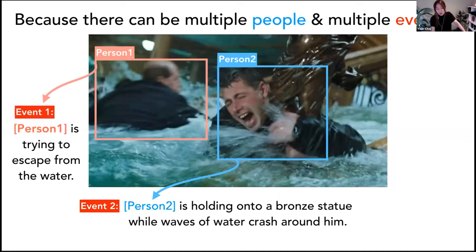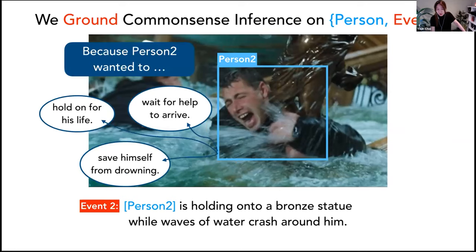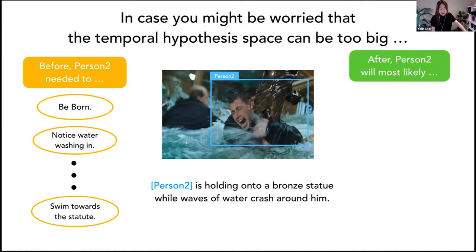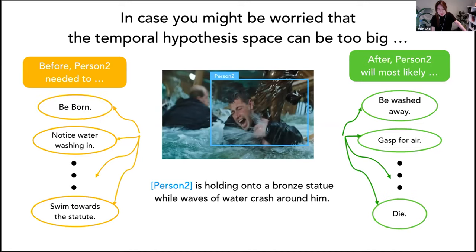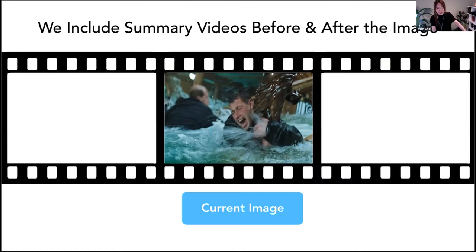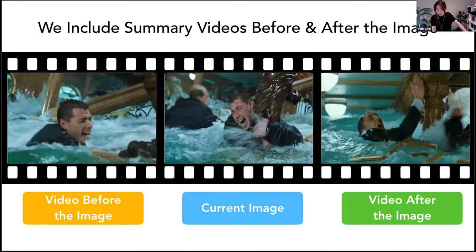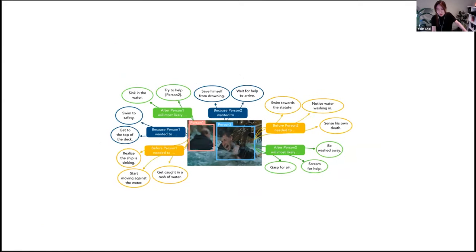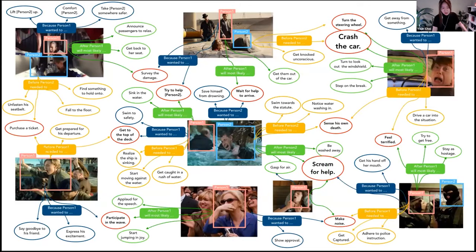It's important that we ground all these common sense inferences on the pair of a person and a particular event that the person is engaged in. Sometimes the same person can be engaged in two different events in the same image. About the temporal inferences before and after — some people might annotate vacuous things like 'before person two was born' and 'eventually he dies.' To better constrain the annotation, we also present summary videos before and after the screenshot. It's optional — they don't have to look at it, but it's provided in case they want to.